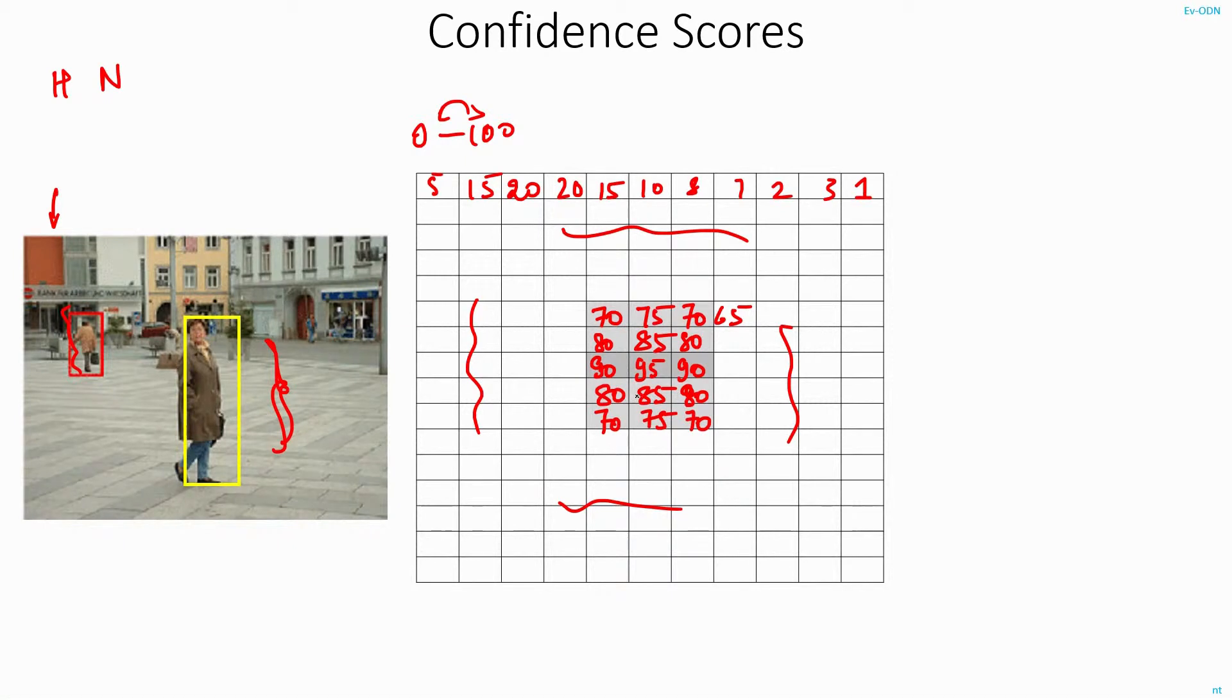Now, by looking at this table, how do I decide which are the locations that are valid and which locations are invalid? That is, what is the confidence score threshold that I have to select, so that only the valid bounding boxes are selected?